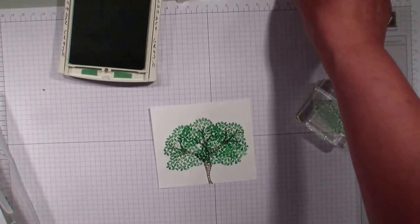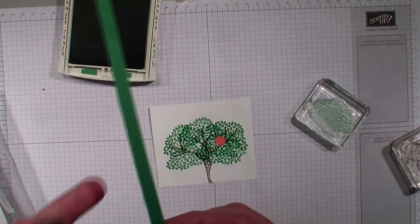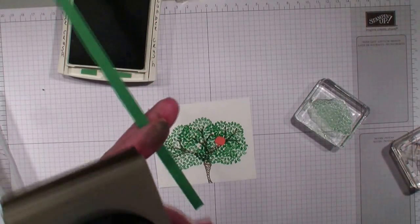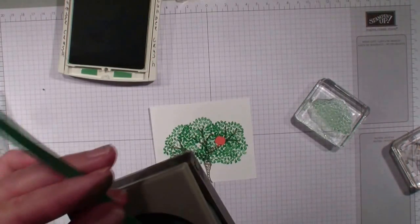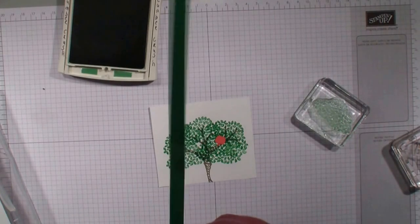I am also going to do the same thing as I did with that apple. I am going to just bring in a smaller, this is like a quarter inch strip of that Cucumber Crush and I just want this time the little leaf.